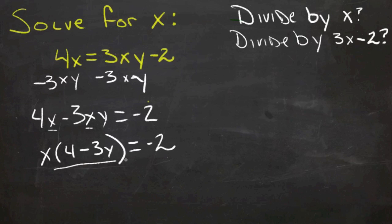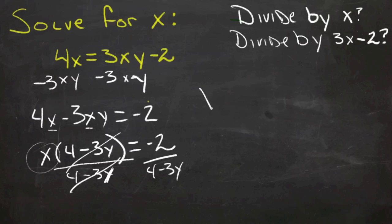And that equals negative 2. Then I could divide both sides by 4 minus 3y. And that would cancel over here. It would cancel over here, and we'd have 4 minus 3y over here. Now we have x by itself.